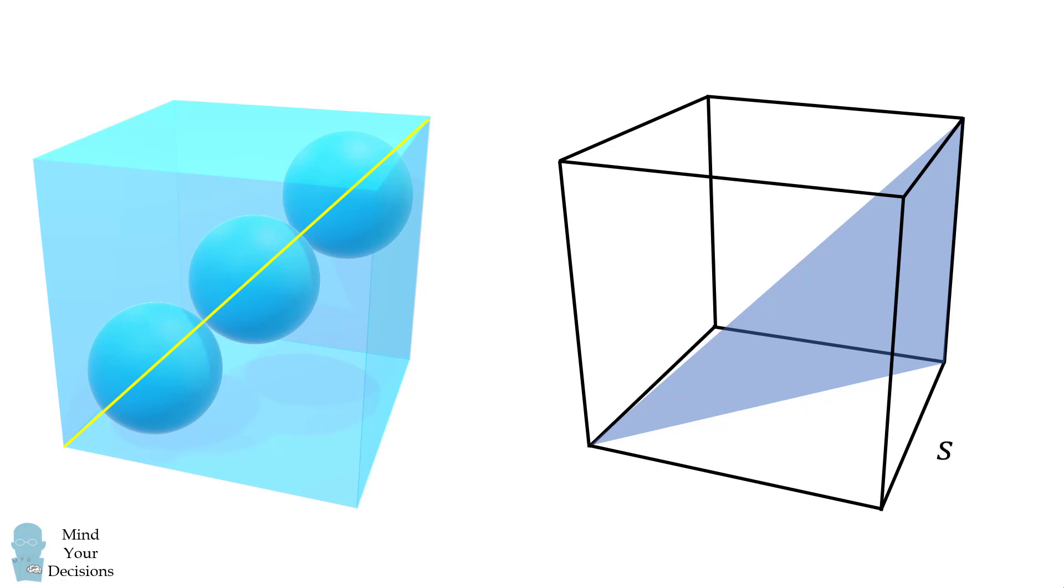Suppose the cube has an edge length equal to s. Then the bottom face will have a diagonal that has a length s times the square root of 2. Then the long diagonal can be calculated using your favorite theorem. This results in the length of s times the square root of 3.